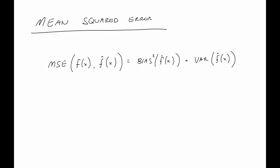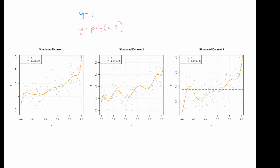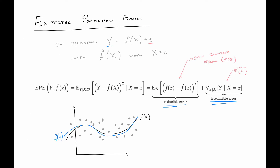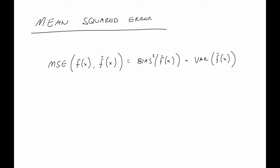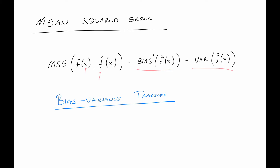So, going back to the mean squared error: it turns out that MSE can also be decomposed. It decomposes into the bias squared plus the variance. If we're trying to estimate the mean function at a particular value of x by some estimate f-hat, the mean squared error breaks down to be the bias squared plus the variance.